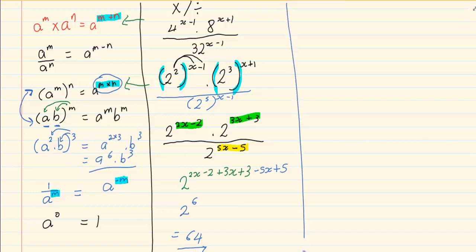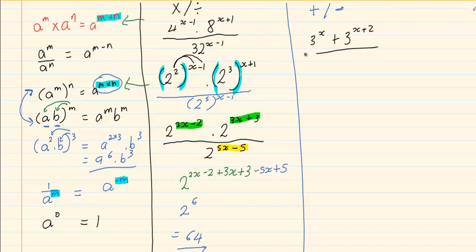The next style of question is where you have addition or subtraction in the question. Notice that in the previous question every term was connected by multiplication — there was no plus or minus between them. Now we will have addition and subtraction. For example: 3 to the power of x, plus 3 to the power of (x plus 2), all over 3 to the power of (x minus 1), plus 3 to the power of x.